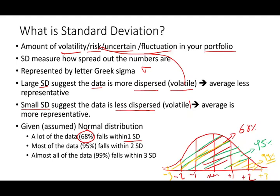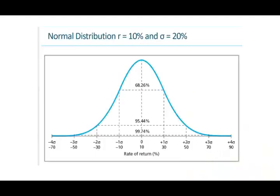Now, why isn't it 100%? Because you could always have something outside the normal, which is called the black swan. But within three standard deviations, all the returns should essentially fall. The majority — 68% — should fall within one standard deviation. Let's take a look at an actual example to see exactly how this works.